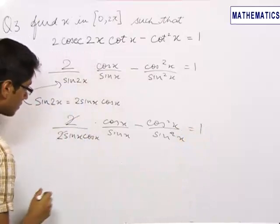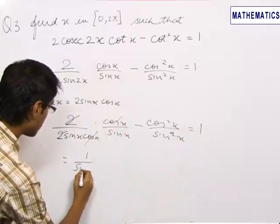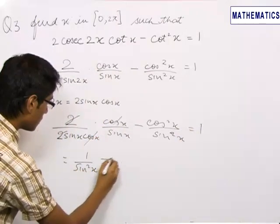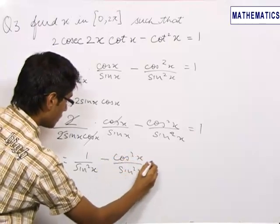This 2 and 2 gets cancelled out, cos x cos x gets cancelled out and this becomes 1 upon sin square x minus cos square x upon sin square x equals 1.